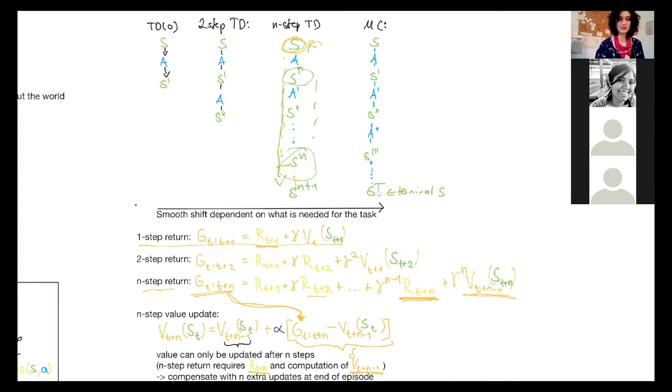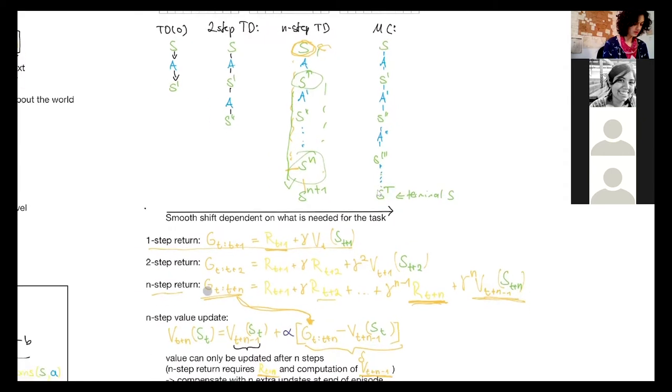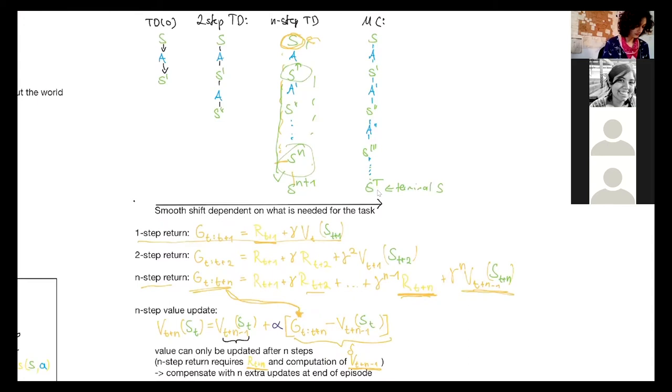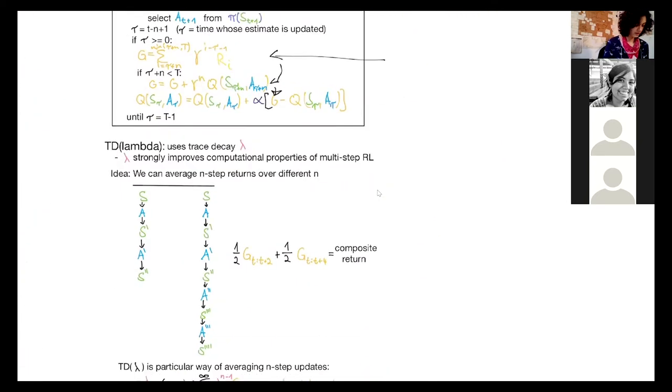So the gamma in the, for the discounting of the, in this return, the gamma is discounting the value estimate. So how strongly you weigh close-term rewards as opposed to future long-term rewards. And then the lambda factor is weighing the GT overall. So basically you take this whole thing and you add it up for different ends. For example, for here, n is 2 and n is 4, and then you weigh both by 0.5 and add them up.